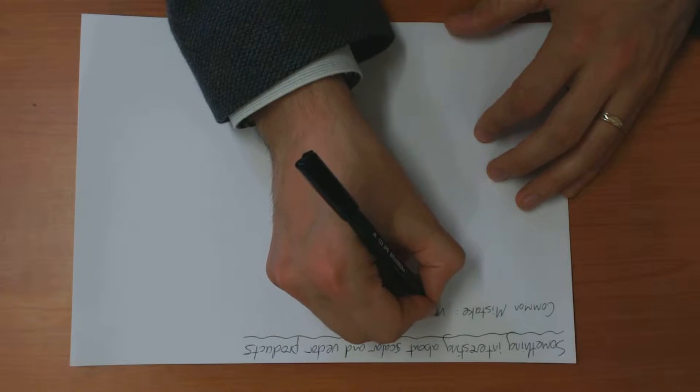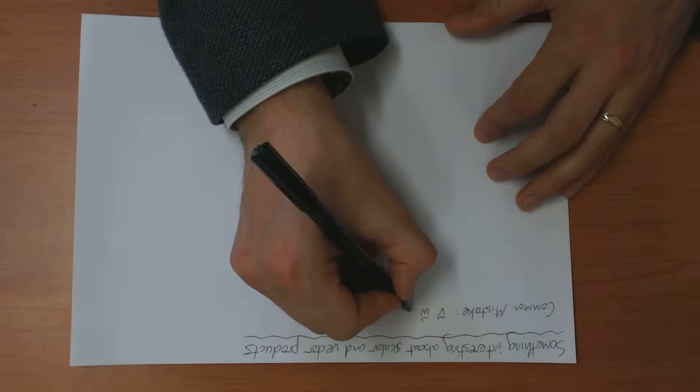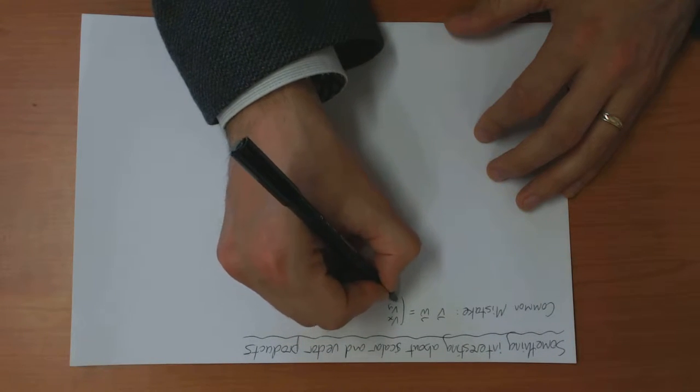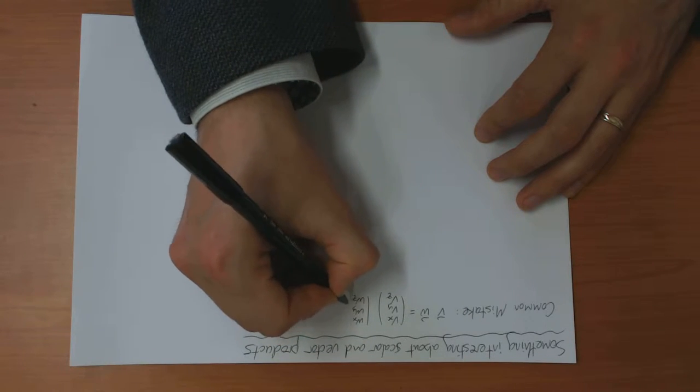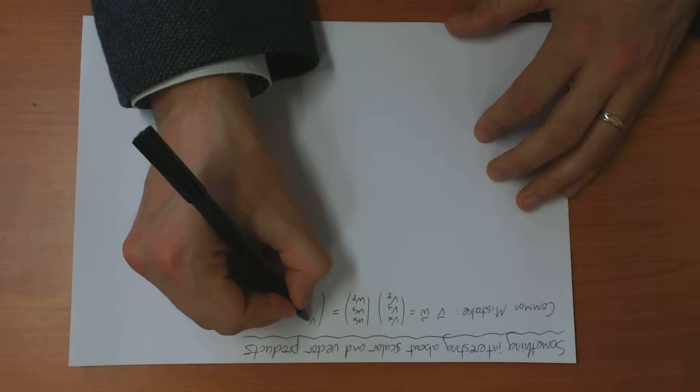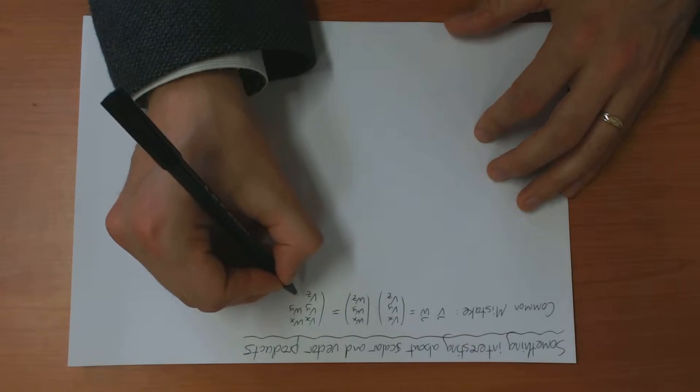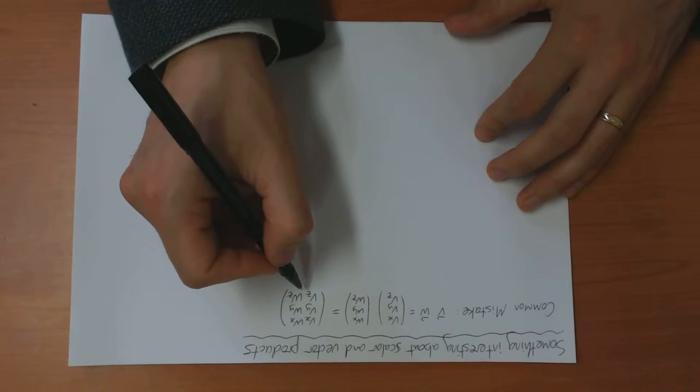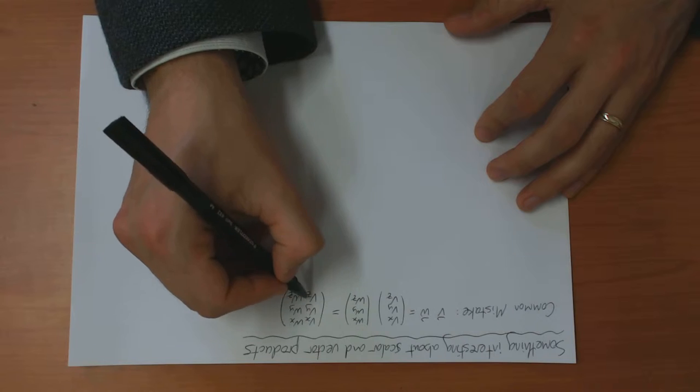Some students try to multiply vectors like this. V and W, which is (Vx, Vy, Vz), (Wx, Wy, Wz) in an orthonormal basis. And they get the result (Vx·Wx, Vy·Wy, Vz·Wz). So this looks like the scalar product instead, but instead of adding them all up to get the scalar product, they just leave it as a vector.